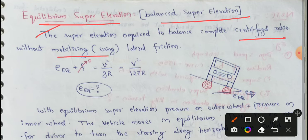Without mobilizing lateral friction. So if you don't use lateral friction, only centrifugal ratio is based. If you use the centrifugal ratio, then vehicle balance is required. Simply, equilibrium super elevation.